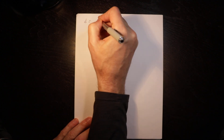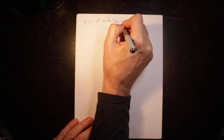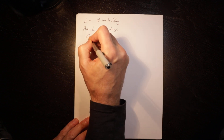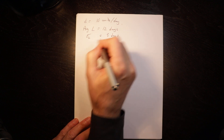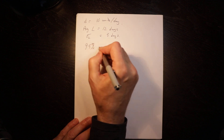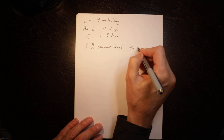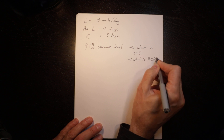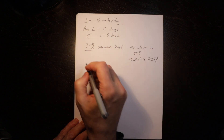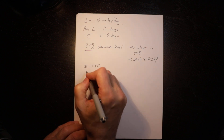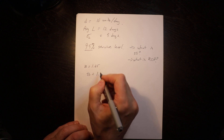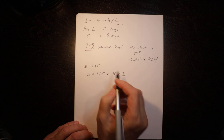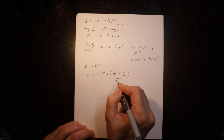Let's do one more example. Demand is 10 units per day, average lead time is 12 days, the standard deviation of lead time is 3 days, and the service level is 95%. We need to find safety stock and the reorder point. At 95%, z equals 1.65. Safety stock equals 1.65 times — and here we need the standard deviation of demand over lead time.